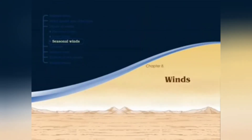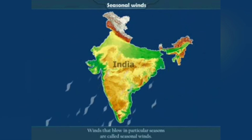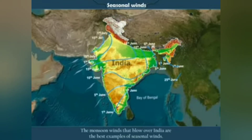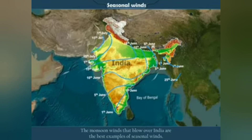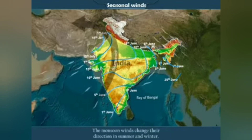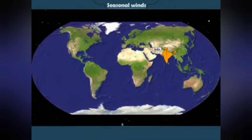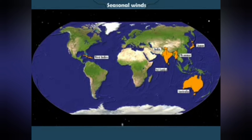Seasonal winds: Winds that blow in particular seasons are called seasonal winds. The monsoon winds that blow over India are the best examples of seasonal winds. The monsoon winds change their direction in summer and winter. India, Sri Lanka, Myanmar, Japan, the West Indies, and Australia receive rain from monsoon winds.